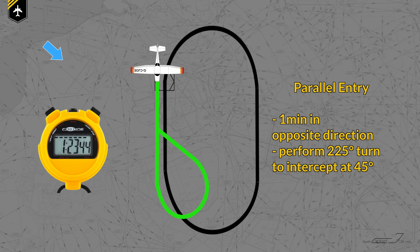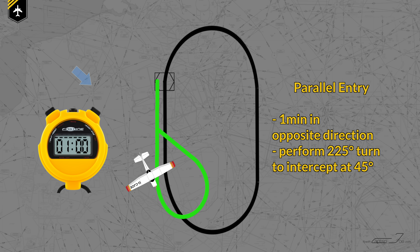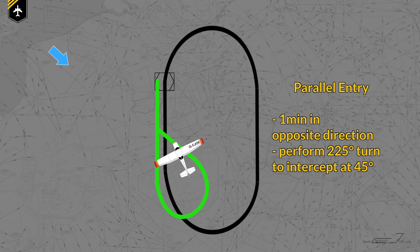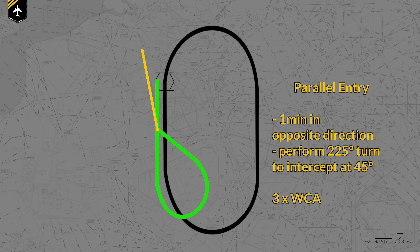Then the parallel entry. You fly parallel to the inbound course in the opposite direction for one minute, then do a 250 degree turn so that you intercept your inbound course at a 45 degree angle. How often do we apply the wind correction angle? One time for the parallel entry, one time for the turn, and one time to track down the inbound course.